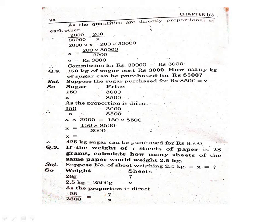As the quantities are directly proportional to each other, we use the direct method: 2000/200 = 30000/X. By cross multiplication: X = 200 × 30000 ÷ 2000. We get 3000. So the commission for rupees 30 thousand is equal to rupees 3000. Clear students?